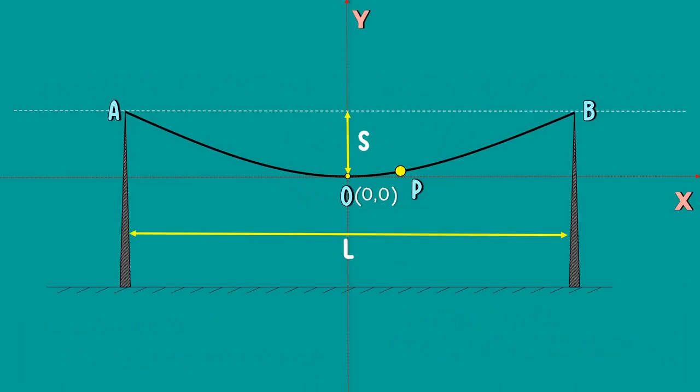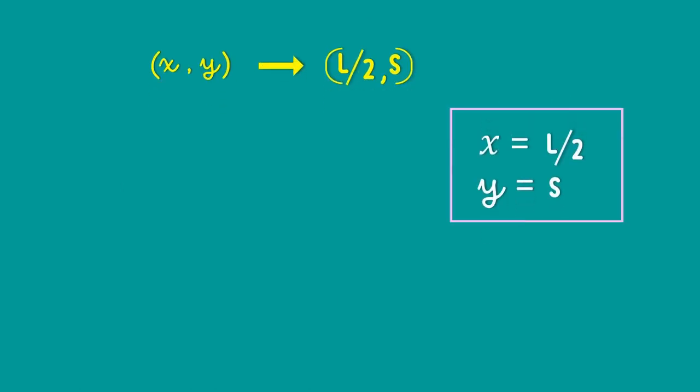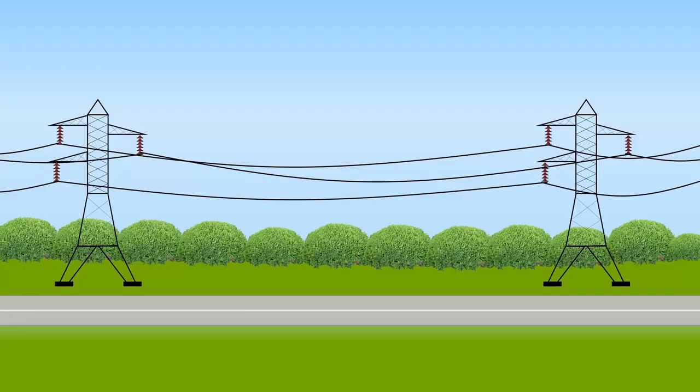Now, if we extend our point P to point B, then the coordinates X and Y will be L by 2 and S. Here, S represents the sag. So if we substitute these X and Y values in our equation, we will get our sag equation. S equals WL squared divided by 8T. This sag equation is applicable only when the supports are at an equal level.